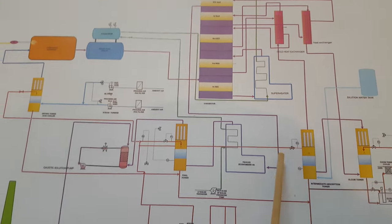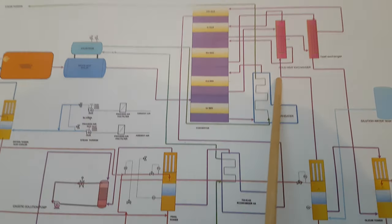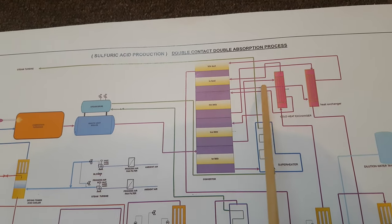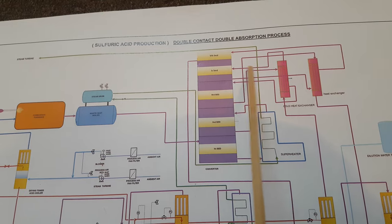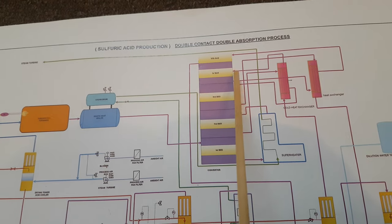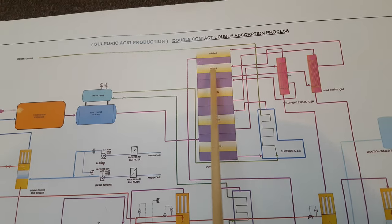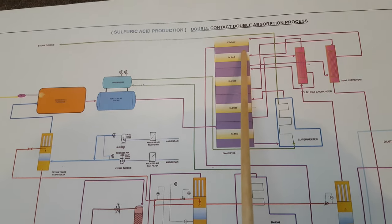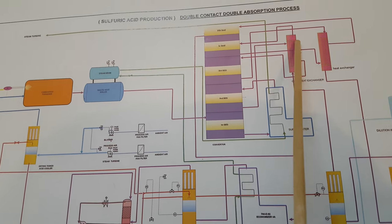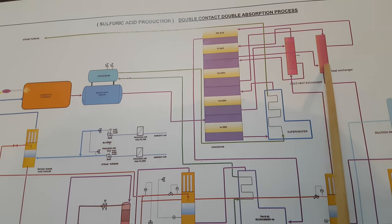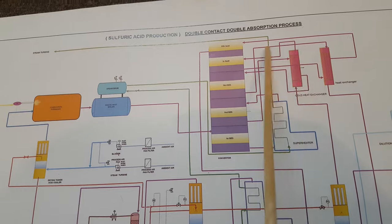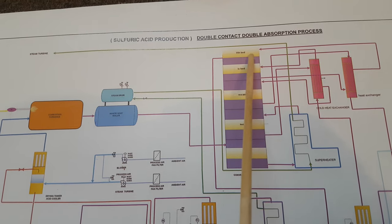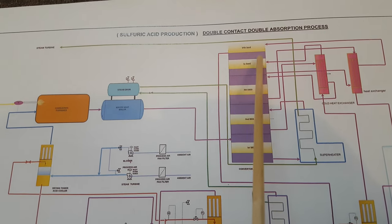From the intermediate absorption tower, sulfuric acid is circulated — from the top acid is circulated and from the bottom gas contacts the sulfuric acid so concentration increases. Then again gas goes to the heat exchanger, and from the heat exchanger gas goes to the fourth bed. From the fourth bed, at around 420–430°C, gas passes over the catalyst — sulfur dioxide converts to sulfur trioxide. Again heat is released, so the exothermic heat is removed by sending it to the heat exchanger where that heat is utilized.